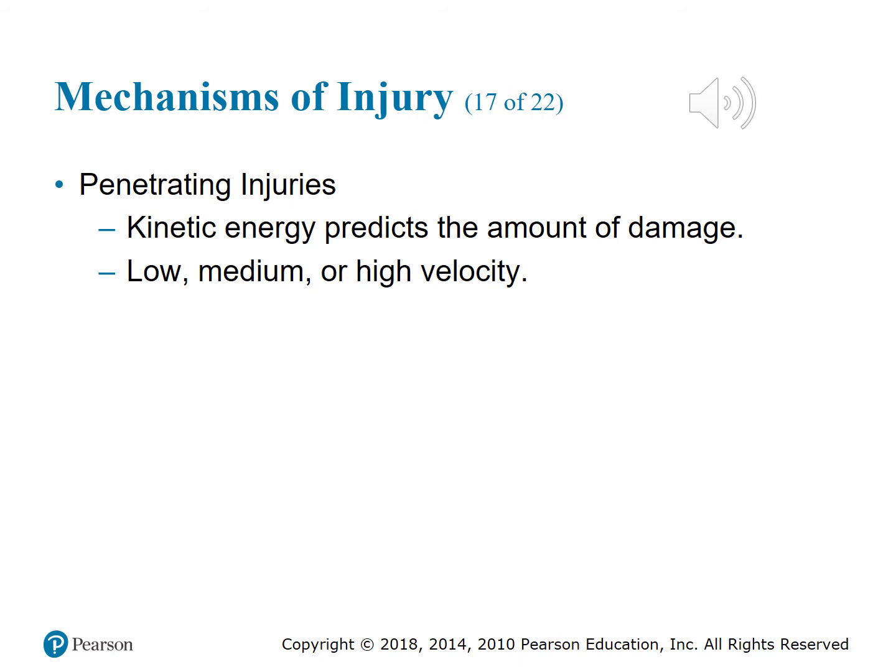Penetrating injuries have three categories: low velocity, medium velocity, and high velocity. Low velocity includes stabbings with knives, sticks, or similar objects — still very dangerous. Medium velocity is associated with handguns and shotguns. High velocity involves rifling rounds — any type of rifle produces high velocity. Review the next slides on penetrating injury patterns.